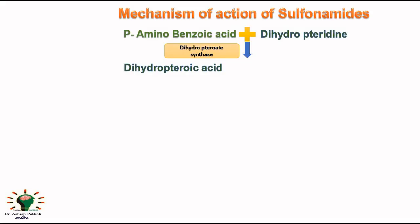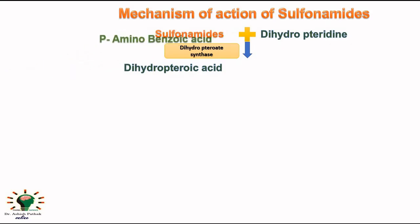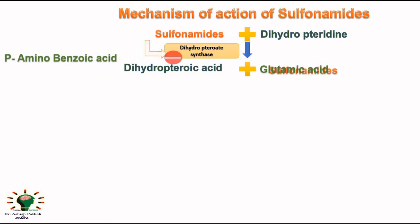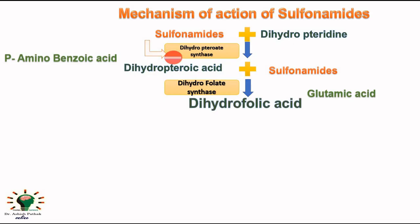Being a structural analog of PABA, sulfonamide inhibits dihydropterin synthase enzyme and therefore inhibits dihydropterin acid synthesis. In a similar way, it also inhibits dihydrofolic acid synthesis by interfering with the incorporation of glutamic acid and inhibiting dihydrofolate synthase enzyme, resulting in inhibition of dihydrofolic acid synthesis.